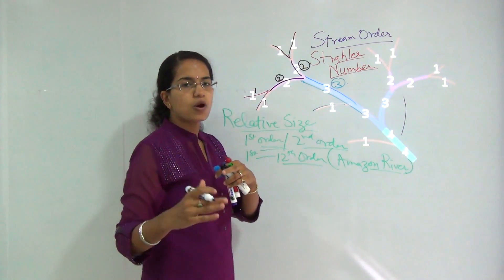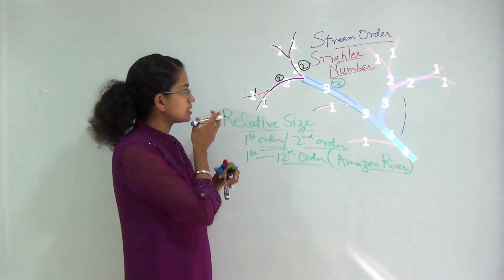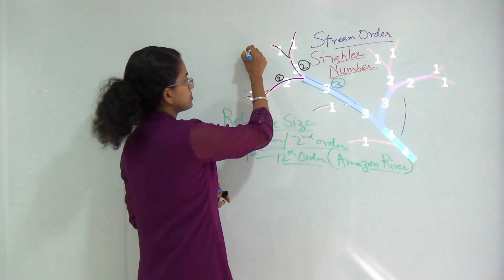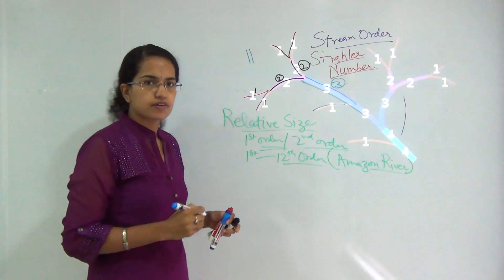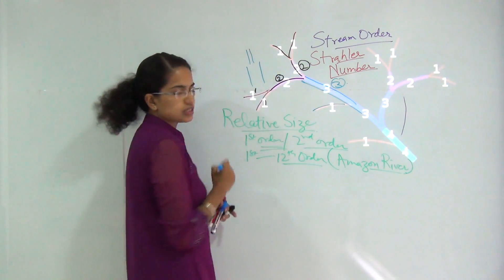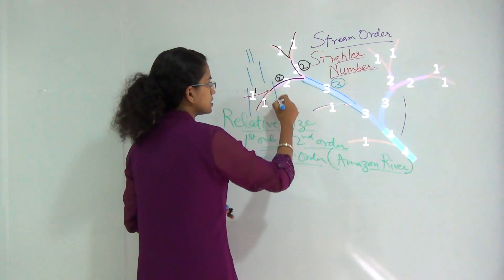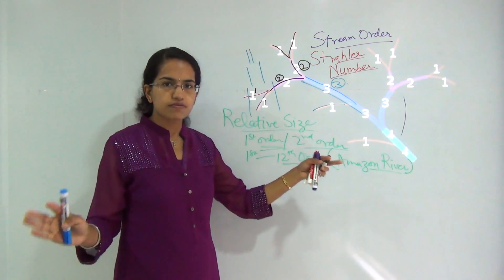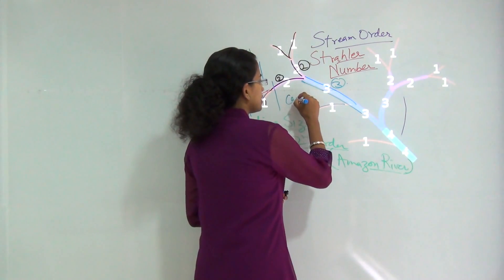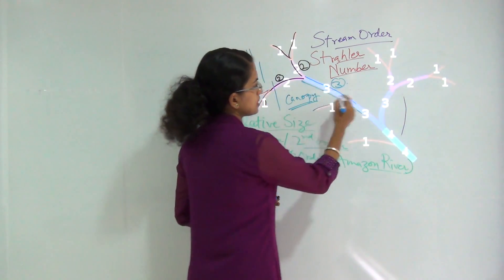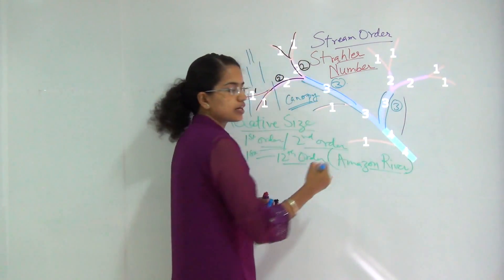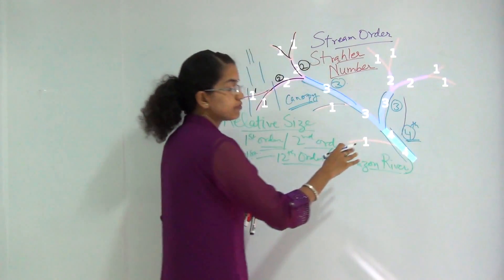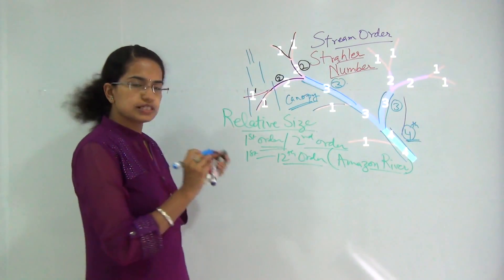A higher stream order is formed only when two streams of equal size meet. As the stream order increases, the size and flow of the river increases. For a first order stream the river may be narrow, and for the second and third order streams the width increases progressively. Two third order streams joining together form a fourth order stream, which would be much bigger compared to the first and second order streams.